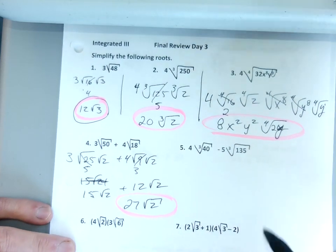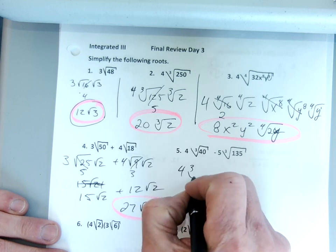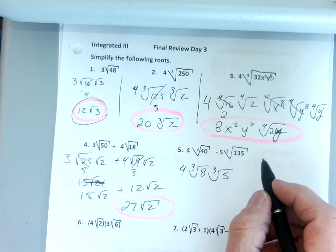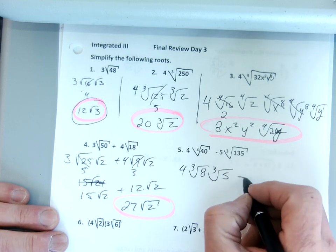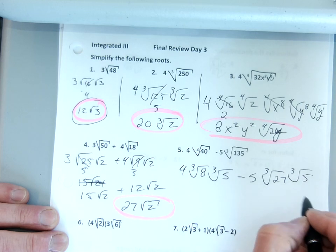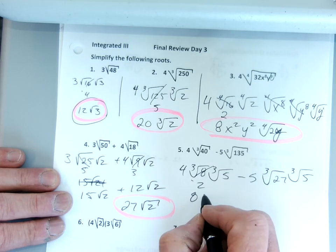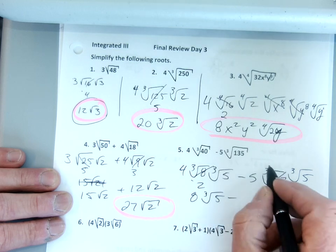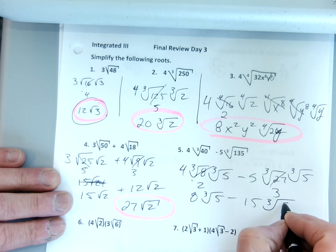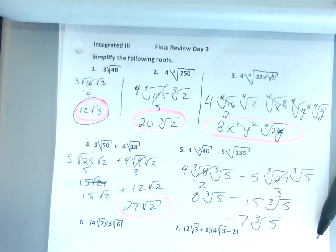Number five: let's see if I can make these a perfect root. 40 could be 8 and 5, because the cube root of 8 is 2. I think this one is 27 times 5. So I've got minus 5 times the cube root of 27 times the cube root of 5. I can take the cube root of 8, which is 2 — 2 times 4 is 8 cube roots of 5 — minus the cube root of 27, which is 3. 3 times 5 is 15 cube roots of 5. Now I can subtract those and get negative 7 cube roots of 5.